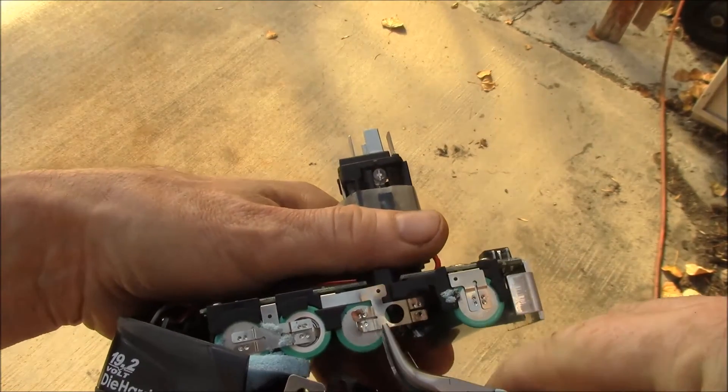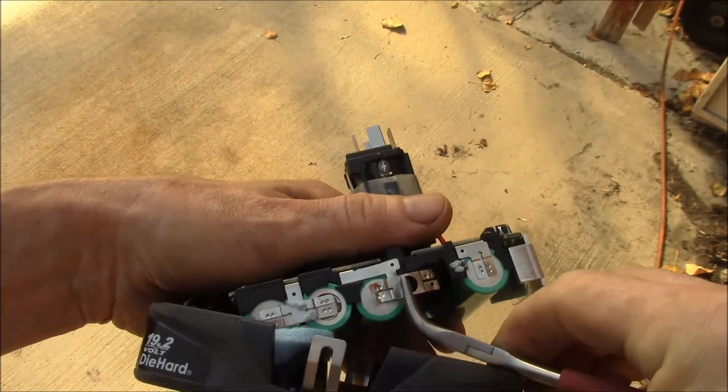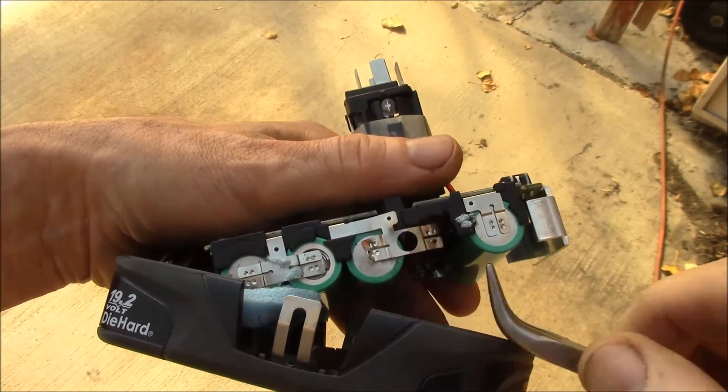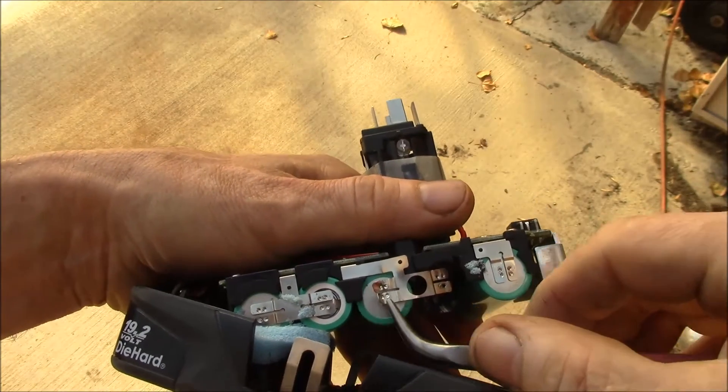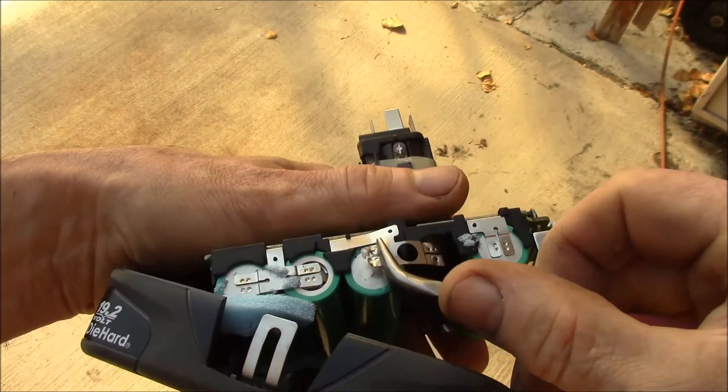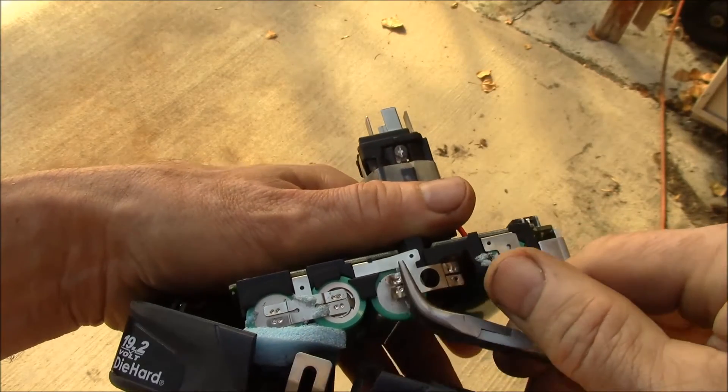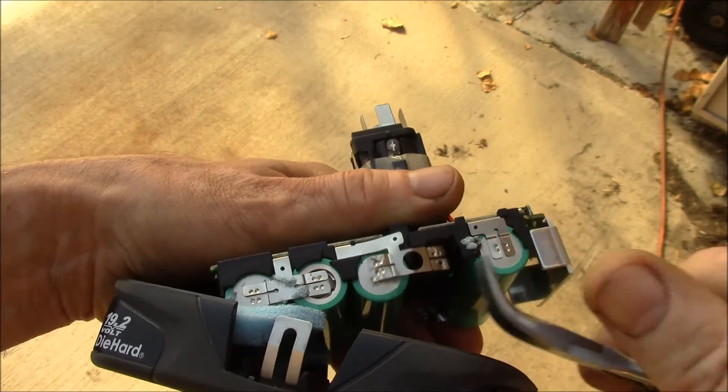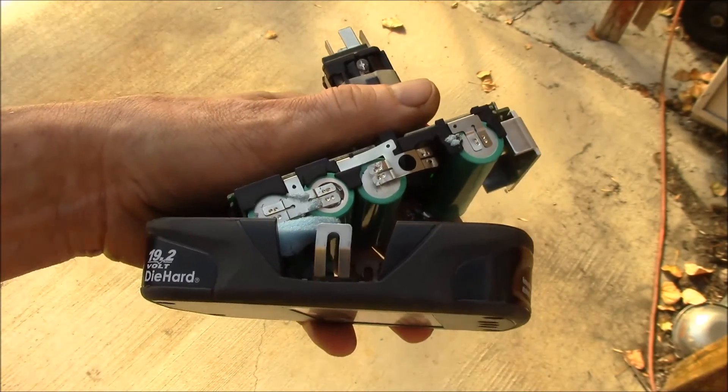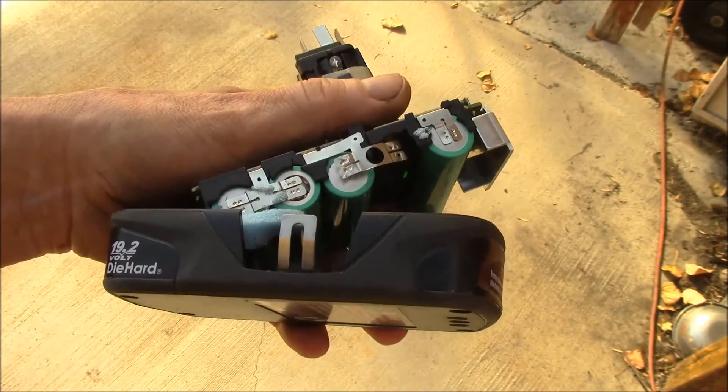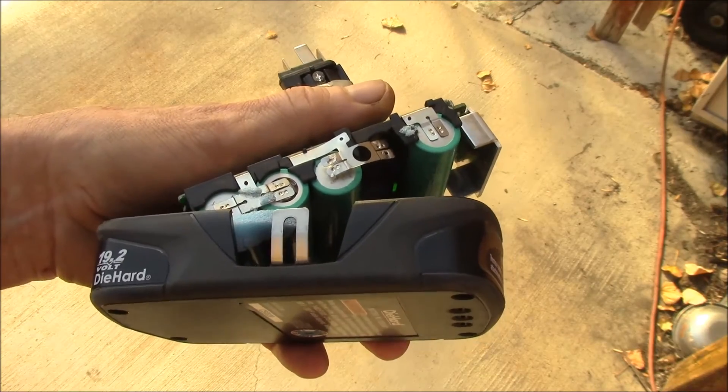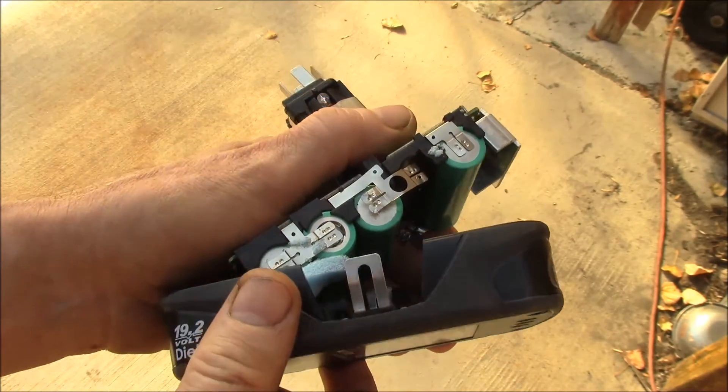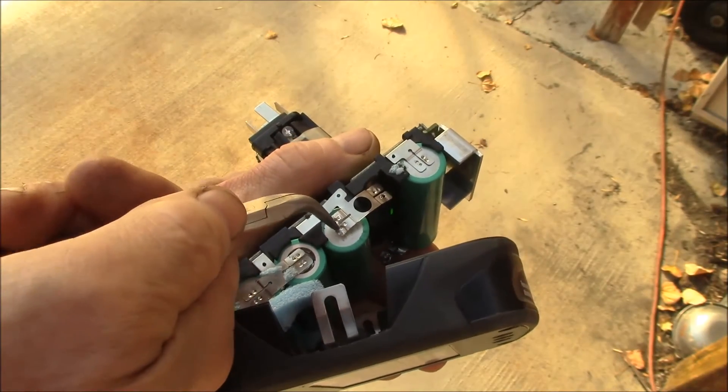There's like two spot welds on each tab there, so if you work on one end and then you work on the other end, you can lever them up. Then you can use the needle nose pliers to flatten everything out again so that when I come to solder the new cell in, I've got a nice flat surface to work with. I'll try to tin these leads.